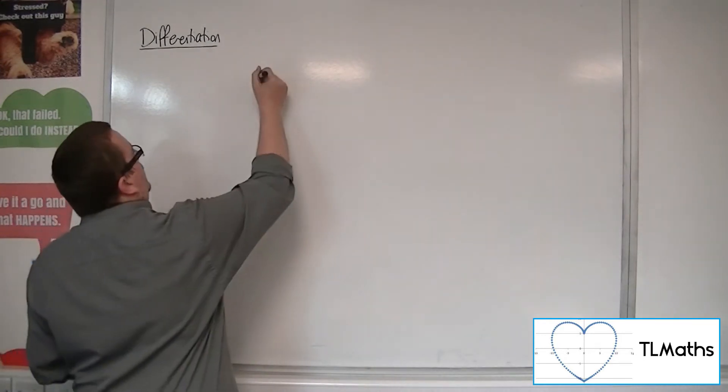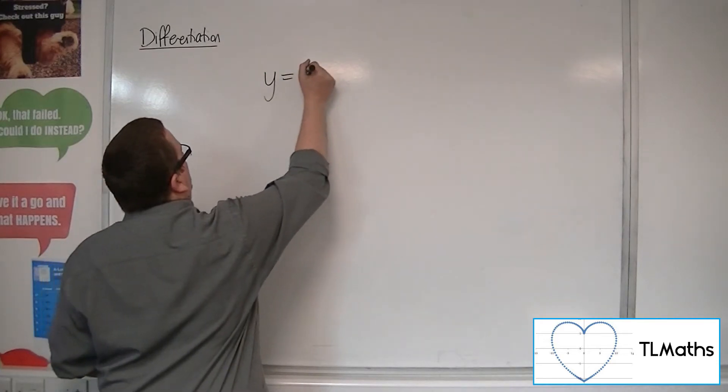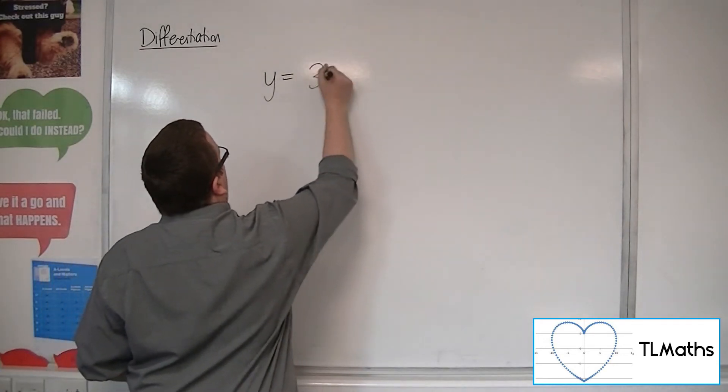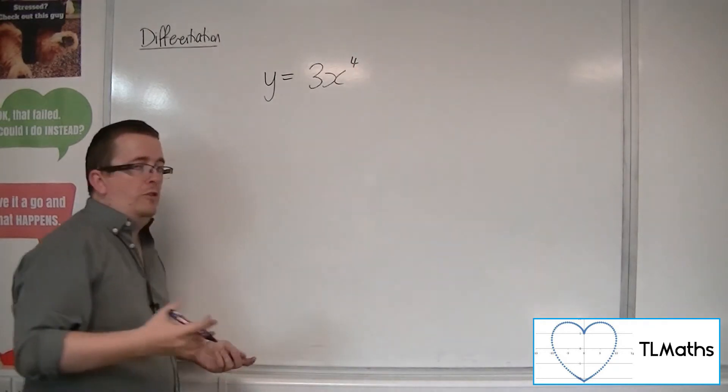So let's say I've got y is equal to, let's say, 3x to the 4, for example.